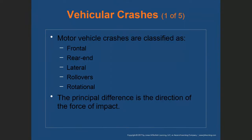Motor vehicle crashes are classified as frontal, rear end, lateral, rollovers, and rotational — five classifications. Regardless of the type, there are three collisions that occur within any motor vehicle crash. There are five different crash types, but within all five, there are three main collisions.